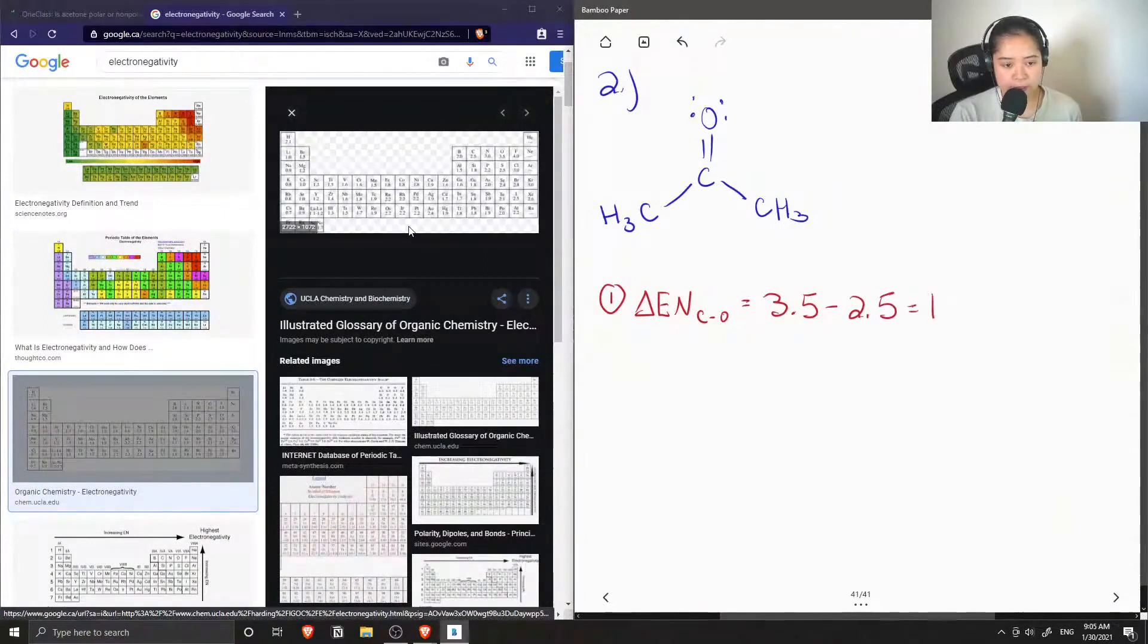So the difference between the two is 1.0. Therefore this bond is polar, and we know that because the electronegativity difference is greater than 0.4, but it's less than 1.69.